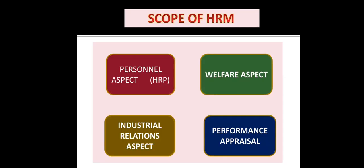Next we move on to the scope of HRM. The four main key points are: personal aspect, welfare aspect, industrial relations aspect, and performance appraisal. The personal aspect, also known as human resource planning, includes manpower planning, recruitment, selection, placement, transfer, promotion, training and development, retrenchment and layoff, etc. HR planning is the process by which the company identifies the number of vacant jobs, whether there is excess staff or a shortage, and deals with either situation accordingly.